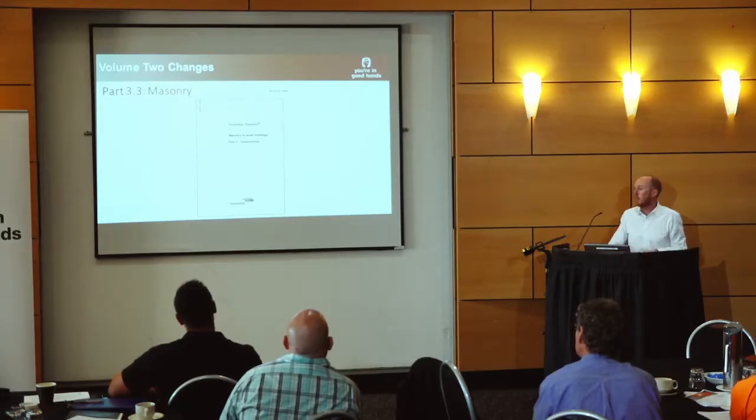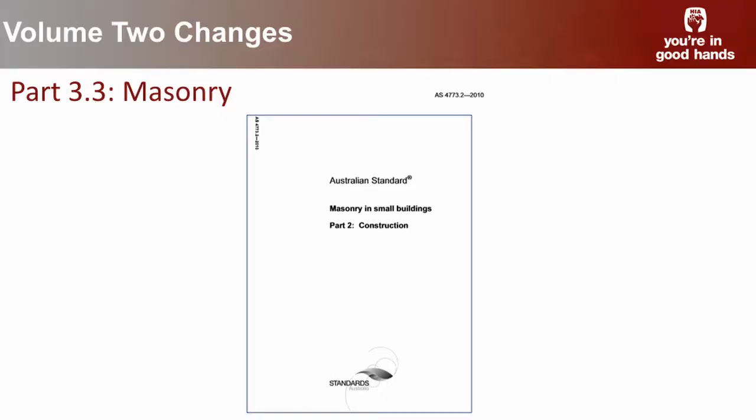Explanatory information has been incorporated into the code to clarify that AS 4678 is one of a range of options, what the intended scope of application is, and that other regulatory requirements may apply in addition. Moving to the masonry changes: up until the 2011 BCA, it contained provisions for masonry veneer, double-brick, and single-skin construction.